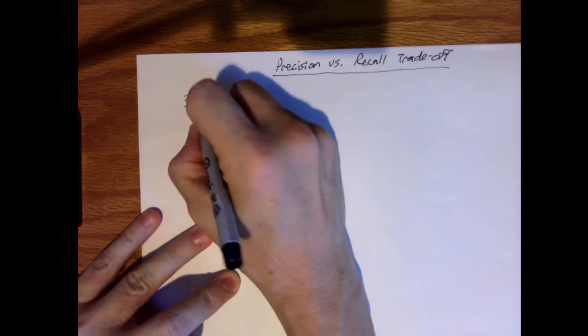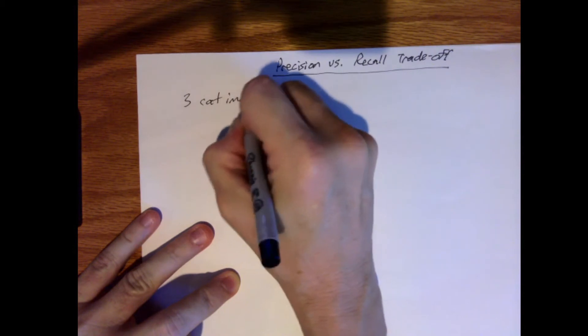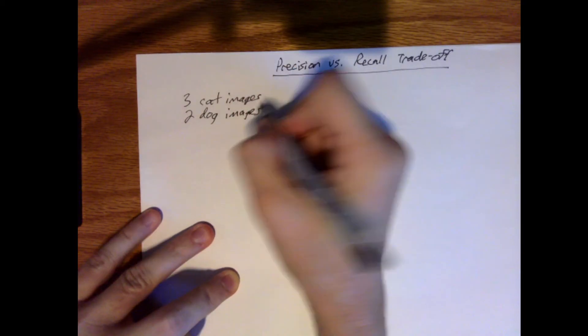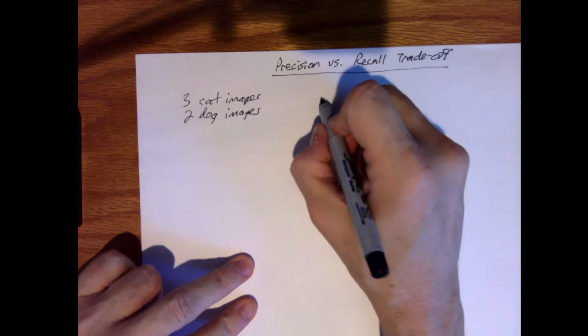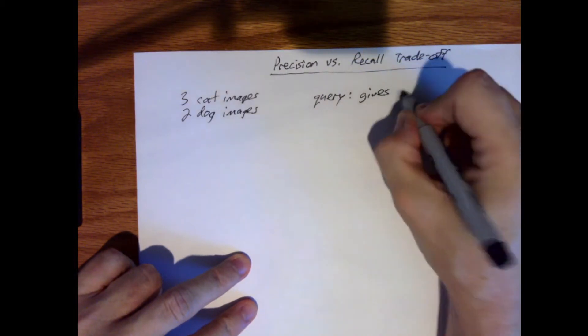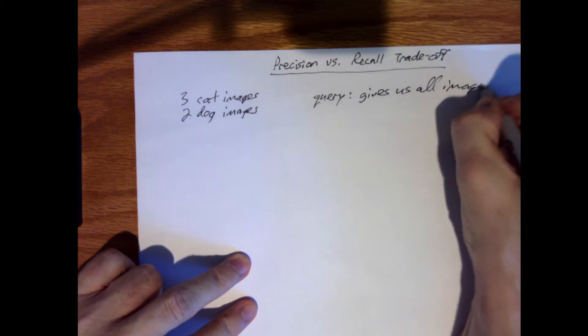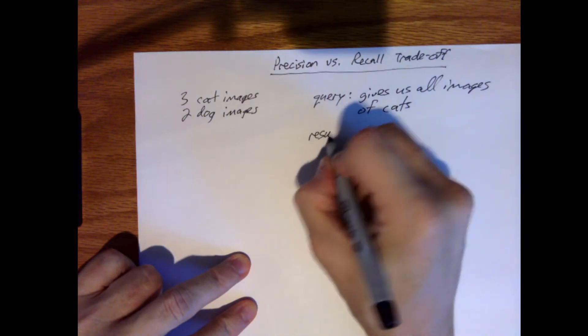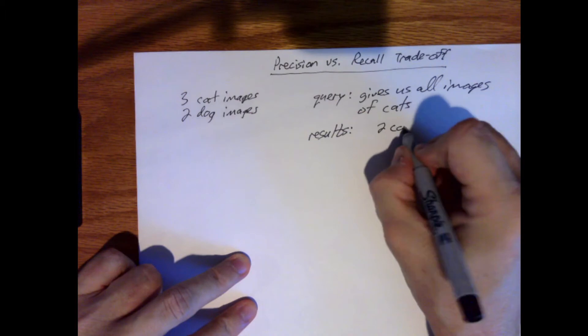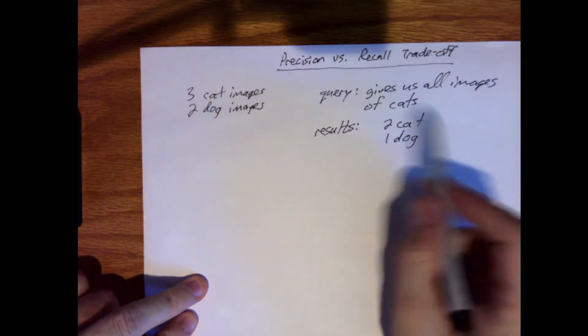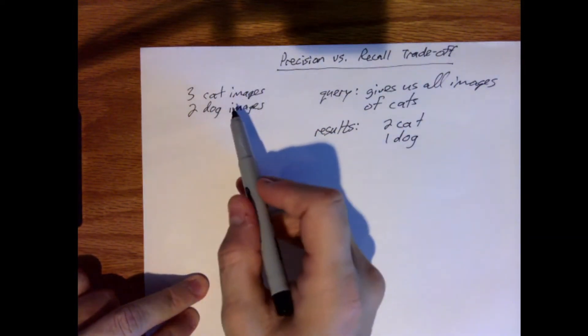Let's say that we have three cat images in our data set and two dog images. And we ask the system, so we have a query here. We ask the system to give us all images of cats. And the results that we get are two cat images and one dog image. These three images were returned out of the five images that we had.